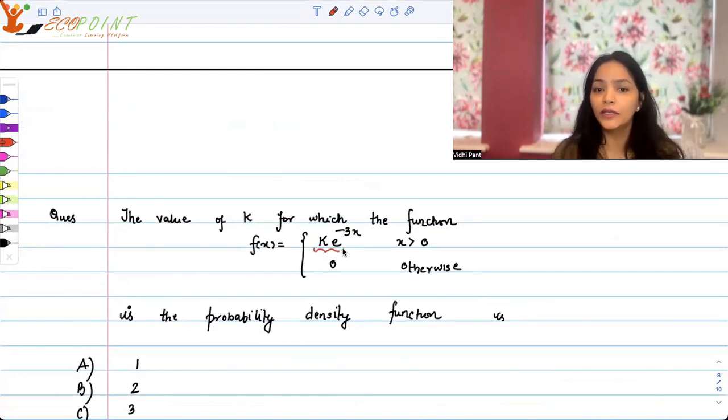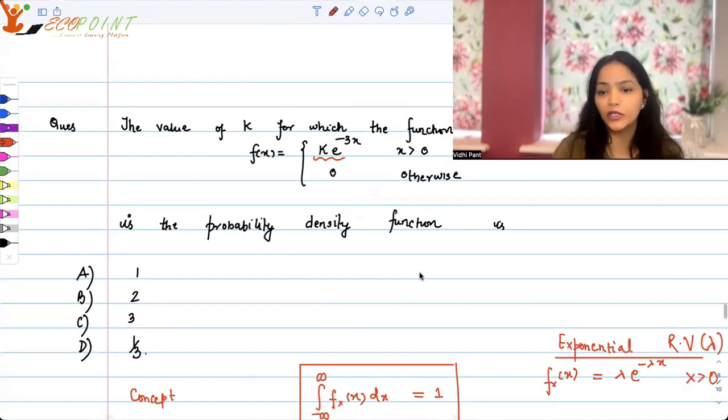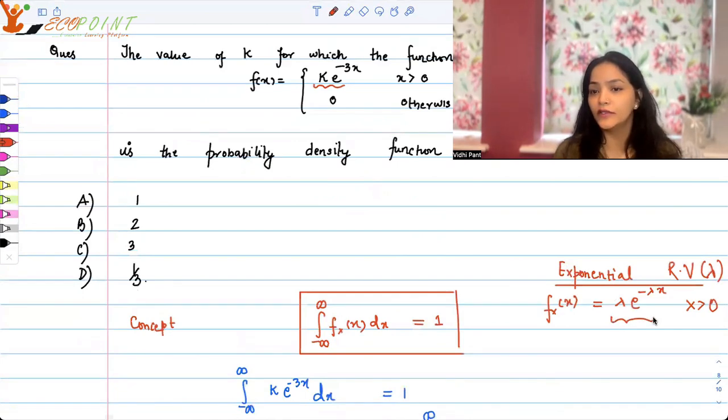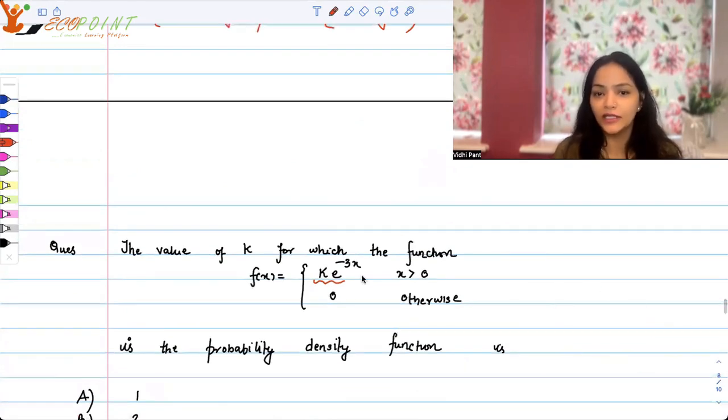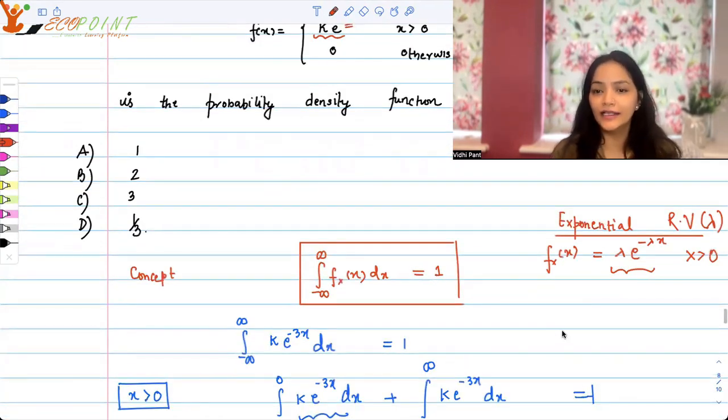Here we have exponential distribution, so the pdf looks like λe^(-λx). For this to be a valid pdf, you would equate it to 1 and you're getting k as 3. Exponential pdf is a valid pdf. So for this expression to be a valid pdf, automatically in your head you could have seen that k should be 3, and that makes it exponential distribution with λ = 3.